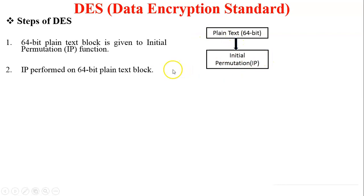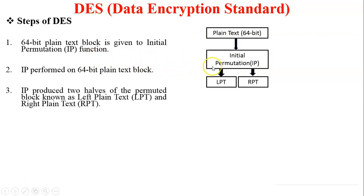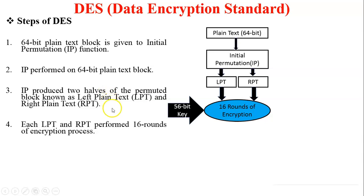Initial permutation is performed on the input plain text. After performing initial permutation, the plain text is converted into two same-size blocks — LPT and RPT. LPT means Left Plain Text and RPT means Right Plain Text. So 64 bits are divided into 32-bit LPT and 32-bit RPT. After this LPT and RPT division, they are input to the 16 rounds of encryption.